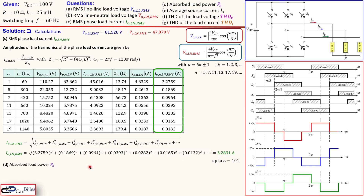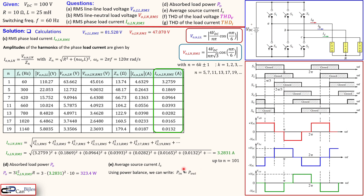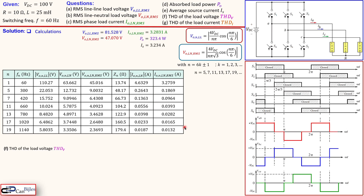For question D, the absorbed load power is the RMS load current squared times R, multiplied by three for the three loads: P = 3 × (Irms)² × R = 323.4 watts. The average source current is found via power balance — input power equals output power, so Is_avg × VDC = P_load. Therefore the average source current is 323.4 / 100 = 3.234 amps.